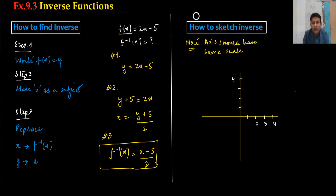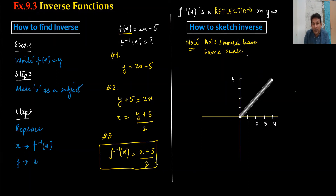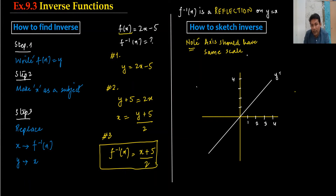How to sketch the inverse function: the inverse function f⁻¹ is a reflection on the line y = x. I am writing this — it is a reflection on y = x. So I need to draw the line y = x first. This line goes diagonally, and I extend it. Whatever the sketch of f(x) is, I have to reflect it over this line y = x.